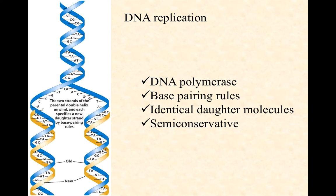Once we've opened them up, each strand then becomes a template — it dictates what the new strand is going to look like, what sequence the new strand is going to be. On the original parent strand, anywhere you have a C the new daughter strand gets a G; anywhere you have a T the new daughter strand gets an A. The base pairing rules will determine it, and therefore the parent strands act as a template for the sequence of the new daughter strand.